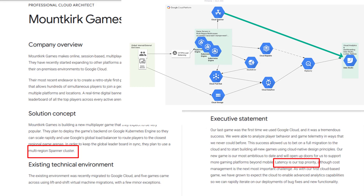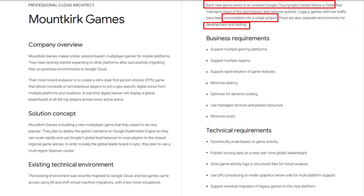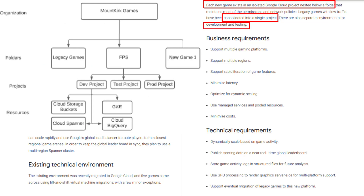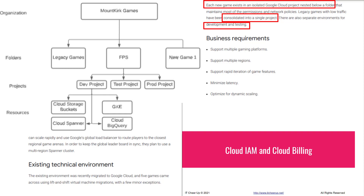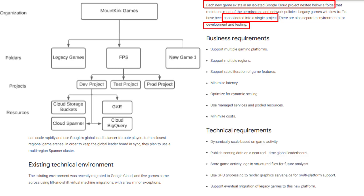Any latency-related questions will be on Cloud Spanner and Cloud BigQuery. The next test area will be on the Google Cloud resource hierarchy and potential questions on cloud billing. Here's what the resource structures look like based on the existing technical environment. You should review the GCP Security Cheat Sheet Part 1 to understand the IAM principles and best practices before your exam.